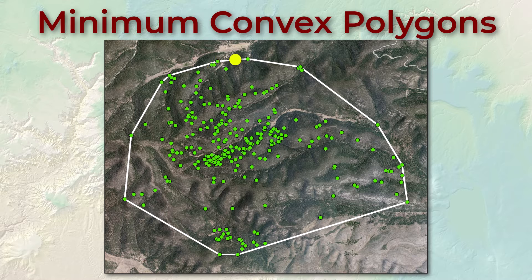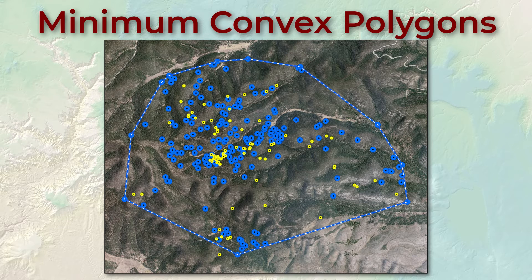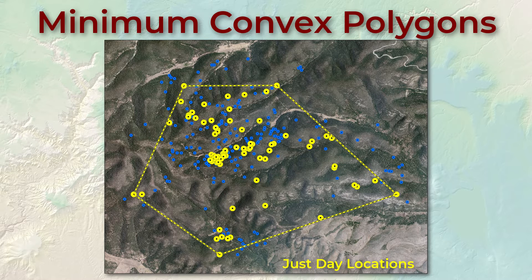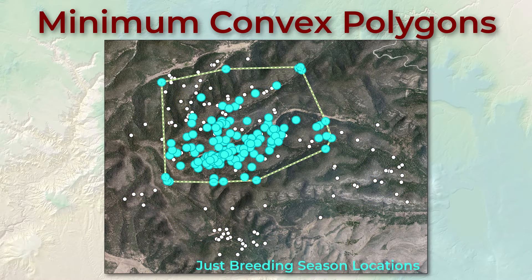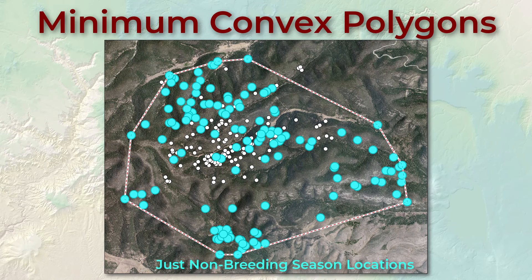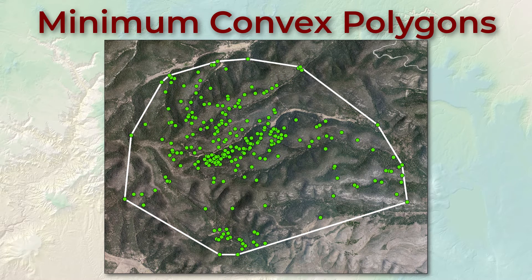The term minimum convex polygon means it's the smallest possible convex polygon containing all the points. MCPs allow us to capture the general home range of an animal and identify regions used at different times. For example, owls behave very differently in daytime versus night — we can easily see where the owl spends its time hunting and foraging by drawing an MCP around the night locations, and where they tend to roost by drawing an MCP around the day locations. Like most species, owls also behave differently in breeding versus non-breeding season, and we can draw MCPs around those respective point sets as well. Convex polygons are conservative because they enclose every possible straight-line route an animal could follow regardless of whether the animal would actually traverse that area.